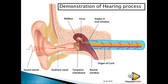Sound waves are received by the pinna, then the pinna sends the information to the tympanic membrane via the auditory canal. The tympanic membrane then causes the three bones — the ossicles: the malleus, incus, and stapes — to vibrate. The vibration is amplified, and the last bone, the stapes, causes the oval window to vibrate.